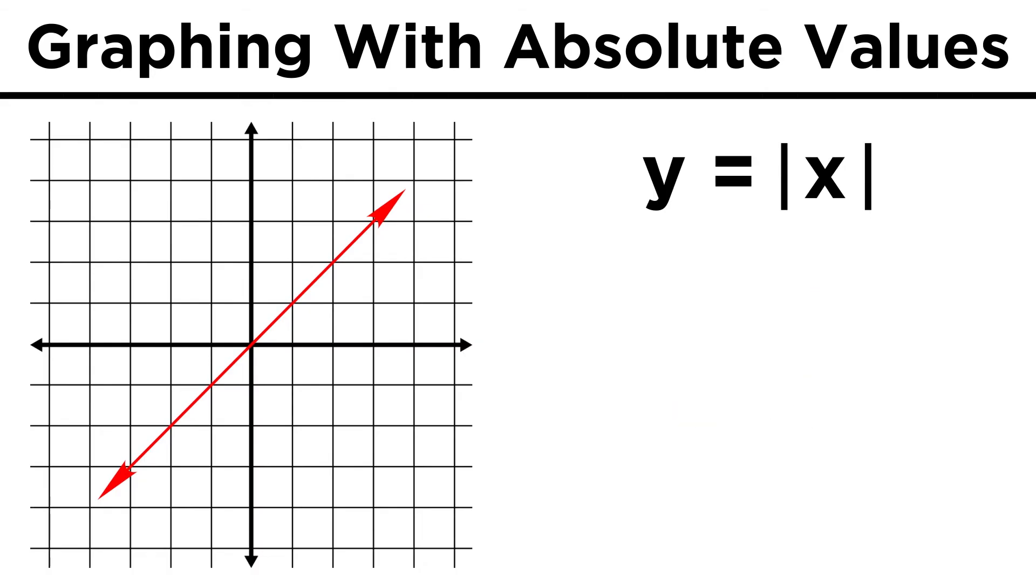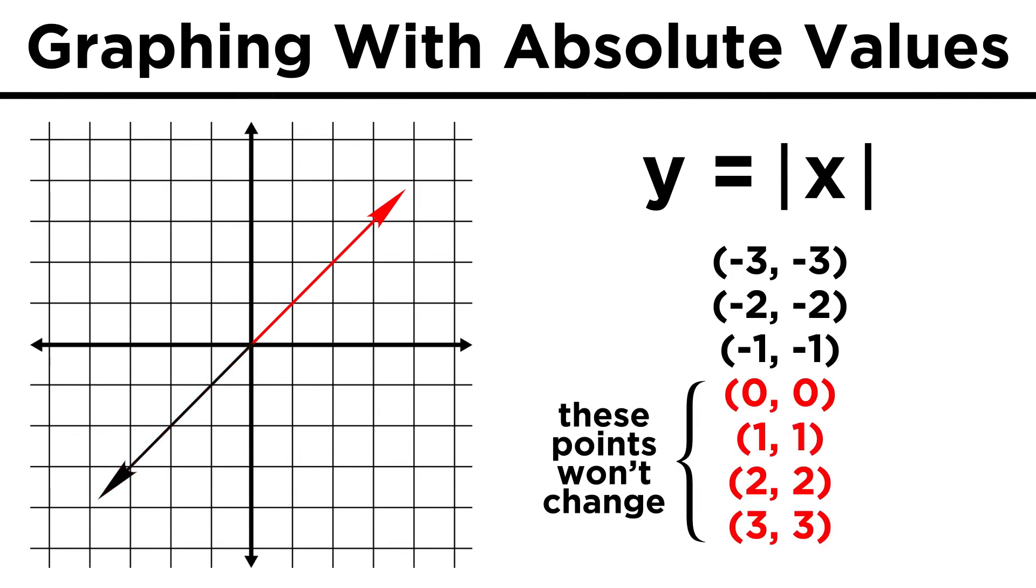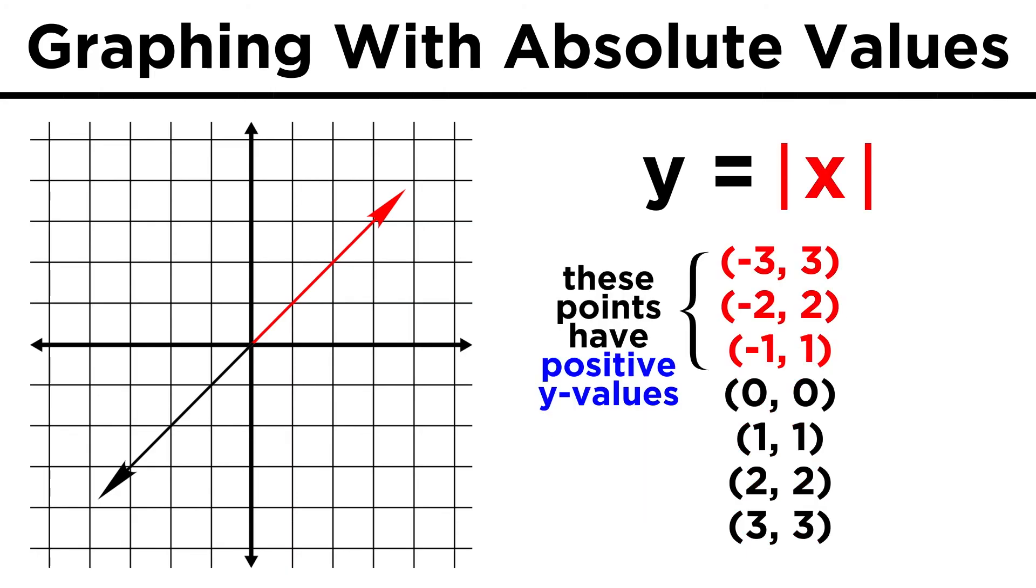Now what if we want to graph y equals the absolute value of x? Well as we said, all positive values remain unchanged, so everything from the y axis to the right will be just like it is now. But negative values will have their signs reversed.